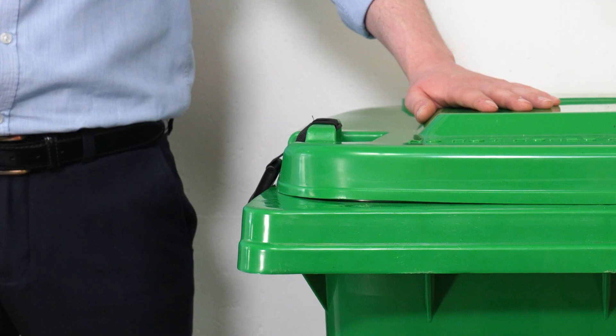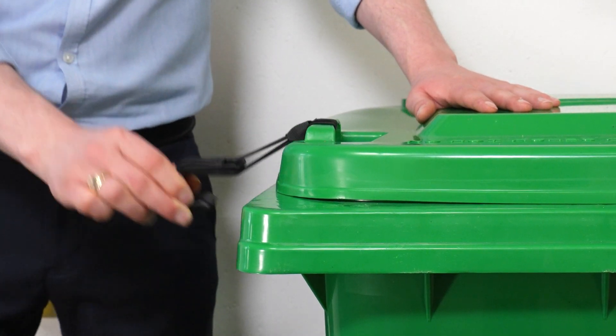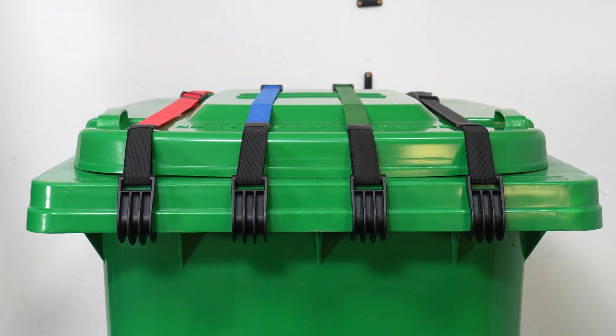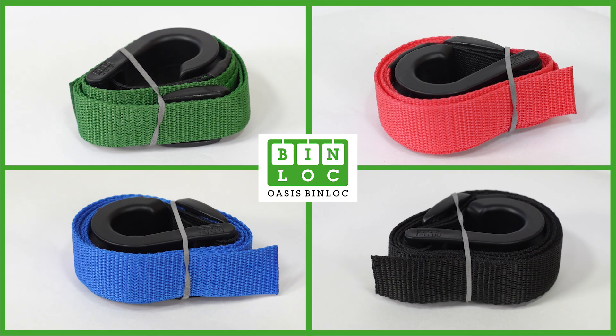This is the easiest to fit and operate. Oasis bin straps will fit all sizes of domestic wheelie bins, and the standard and twin hook straps come in a variety of different colors.